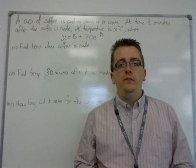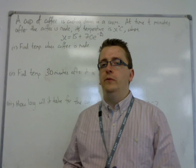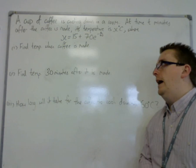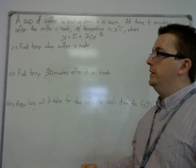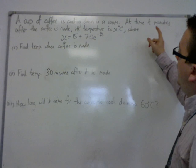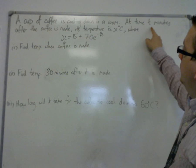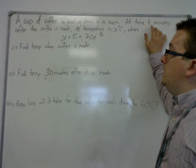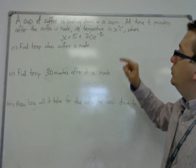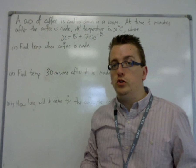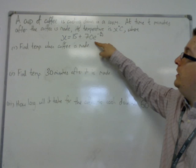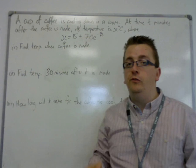Here's a practical problem that involves exponentials and logarithms. We're looking at a cup of coffee that's just been brewed and set on the side, so it's slowly cooling. The problem states: a cup of coffee is cooling down in a room at time t minutes after the coffee is made. Its temperature is x degrees centigrade, where x is given by 15 plus 70 e to the minus t over 40.